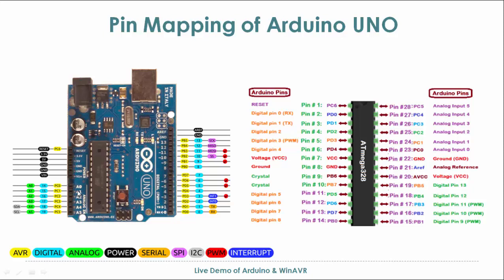When we write a program using the Uno we have to access these analog pins by their names A0 to A5. Similarly, to access the digital inputs and outputs we have to access them by their identifications 0, 1, 2 up to 13. Arduino pin 0 is connected to PD0 and pin number 13 is connected to PB5, which on the right-hand side of the slide corresponds to pin number 19.